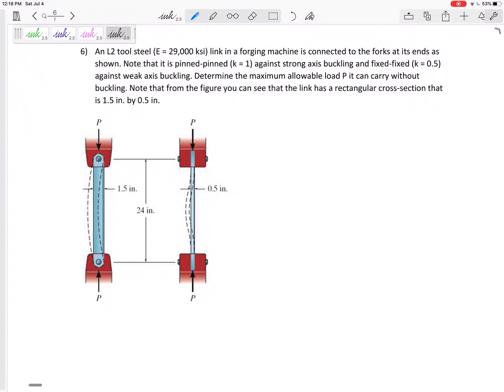Okay, so we have this steel tool E of 29,000 KSI in a forging machine connected to the forks at its ends.